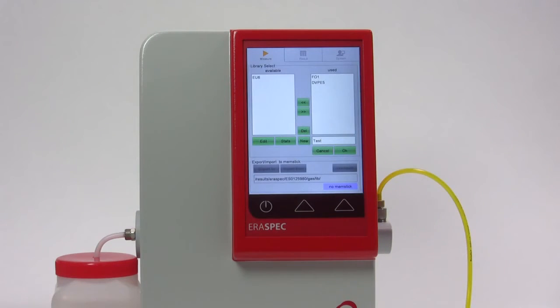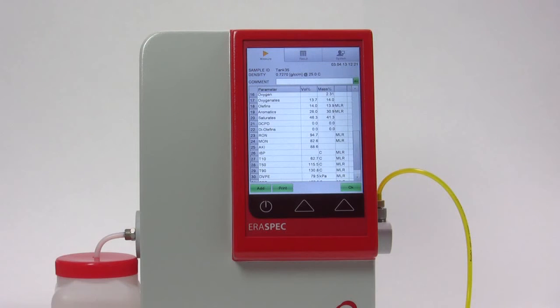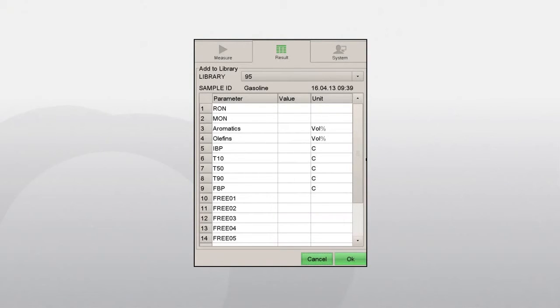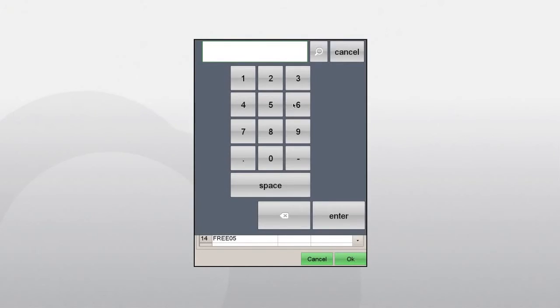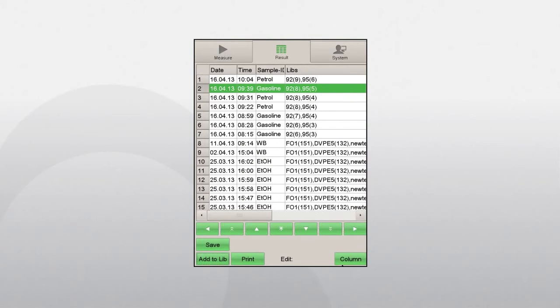Enter the name of the new library and press the button New. It is possible to add a sample directly after a measurement by pressing the Add button, or at any time later from the result memory. Select the desired sample and press Add to Lib. Select the library to which the sample shall be added from the drop-down list in the first line. Then enter the values for all parameters of interest that are available, as determined by the respective reference methods. Press OK to store and add this sample to the selected library.